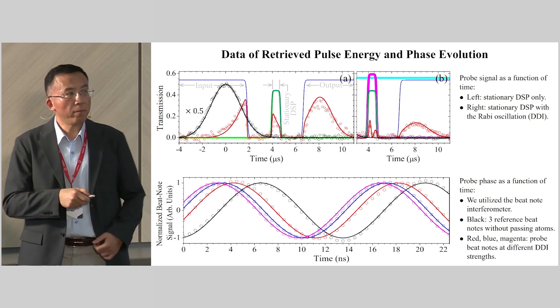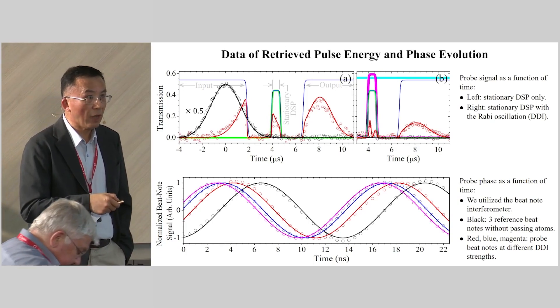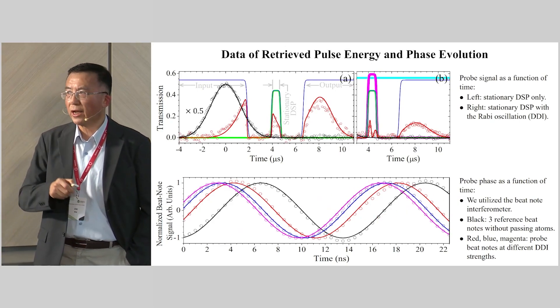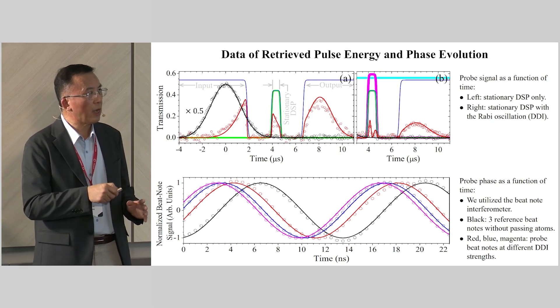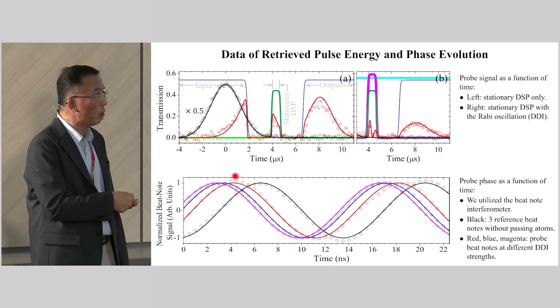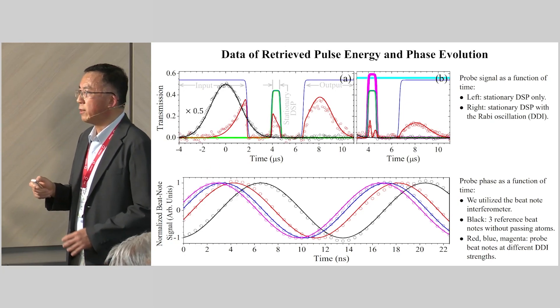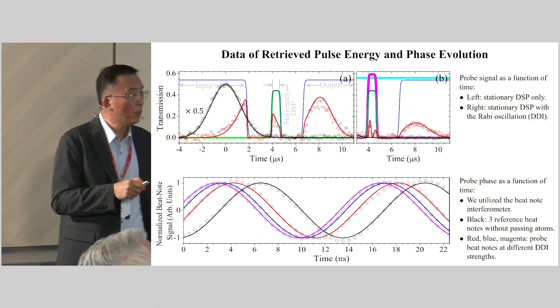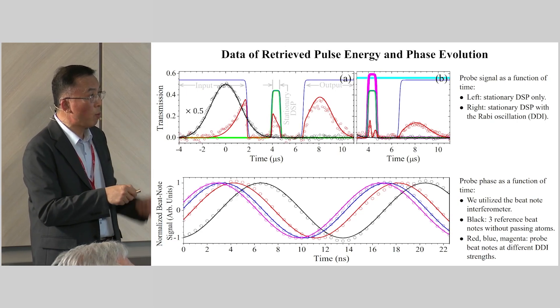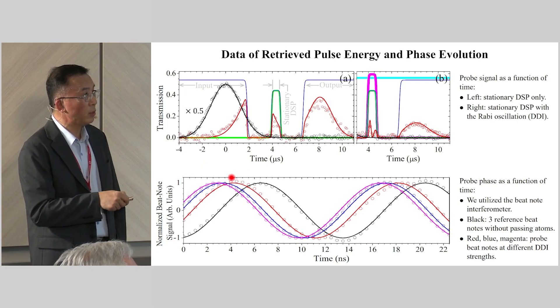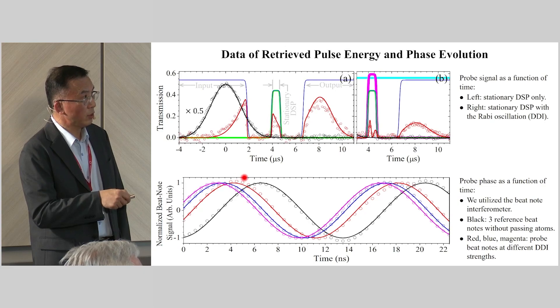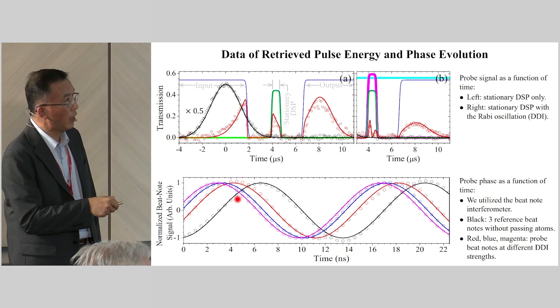In the bottom figure, we measure the phase evolution of the output probe pulse. The black circles are just a reference. There are three sets of black circles, and because they completely overlap each other, we just plot one. The red circle, blue circle, and magenta circle are the probe phase evolution at three different DDI strengths. Red circle with almost no DDI, blue circle with moderate strength DDI, and the magenta circle with the largest DDI. We can see larger dipole-dipole interaction resulting in a larger phase shift.